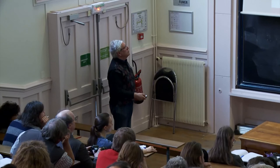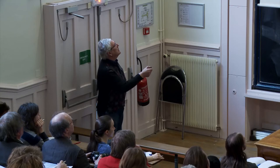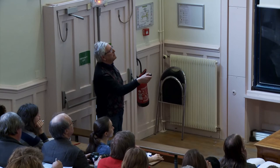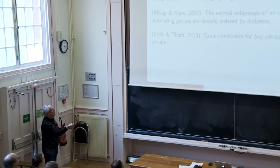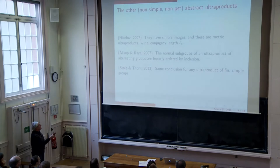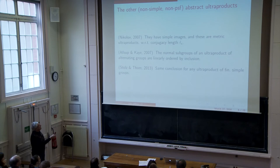What about the rest of the ultraproducts of finite simple groups? Nikolai Nikolov proved a few years ago that all of them have simple images. And these are metric ultraproducts with respect to conjugacy length. John Alsup and Richard Kaye proved quite a long time before 2007, but it was published in 2007, that the normal subgroups of an ultraproduct of alternating groups are linearly ordered by inclusion. And Abel Stolz and Andreas Thom obtained the same conclusion for any ultraproduct of finite simple groups.